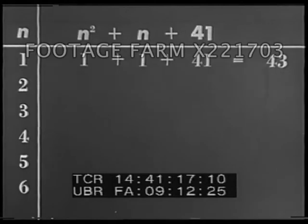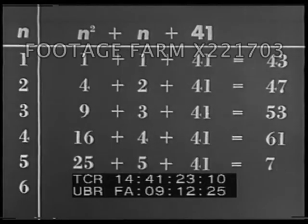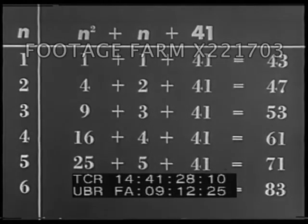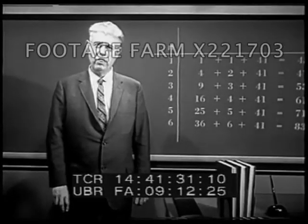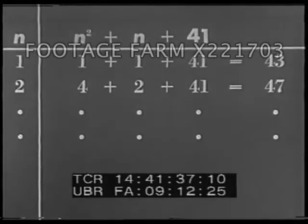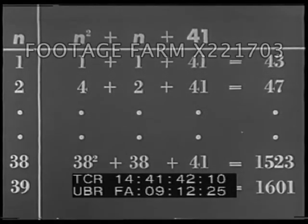Let's take the expression n squared plus n plus 41 and experiment with it by substituting numerical values for n. Let us tabulate several instances. We note that all of the resulting numbers are prime. Can it be that this formula always yields a prime number? For every number up to and including 39, we would find that it does.